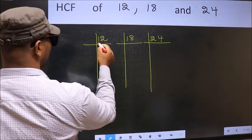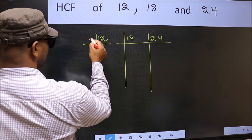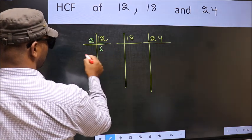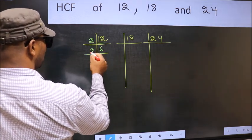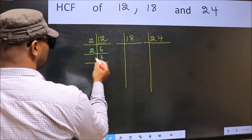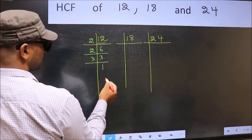Now here we have 12. 12 is 2 times 6 is 12. Now 6 is 2 times 3 is 6. Now we have 3. 3 is a prime number so 3 times 1 is 3.